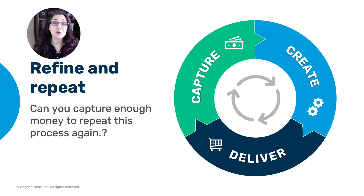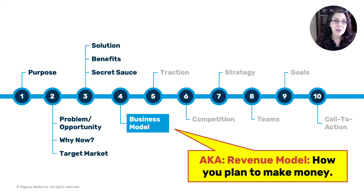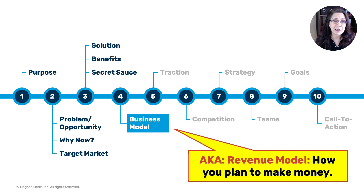The big question is: can you capture enough money to repeat this process again? To stay in business, you need to repeat and refine that process — you might have to update your products, services, and delivery system and fine-tune it until you find that balance where enough money is coming in to justify the cost of operating. Your business model is really all about implementation and how you plan to get paid. That's why many people also call it the revenue model.